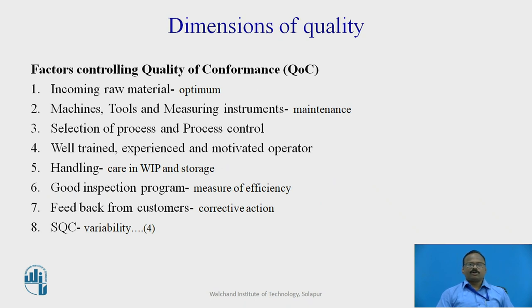Factors controlling quality of conformance: First, incoming raw material — optimum quality should be maintained as far as raw material is concerned. Machine tools and measuring instruments must be kept at a high level of maintenance. Selection of process and process control, which can be done by means of statistical quality control tools and planning. Well-trained, experienced, and motivated operators — training should be given to operators. Handling — care should be taken in work-in-process and storage. A good inspection program measuring efficiency. Feedback from the customer, leading to corrective action. SQC (statistical quality control) — the variability of the product can be controlled by means of SQC.